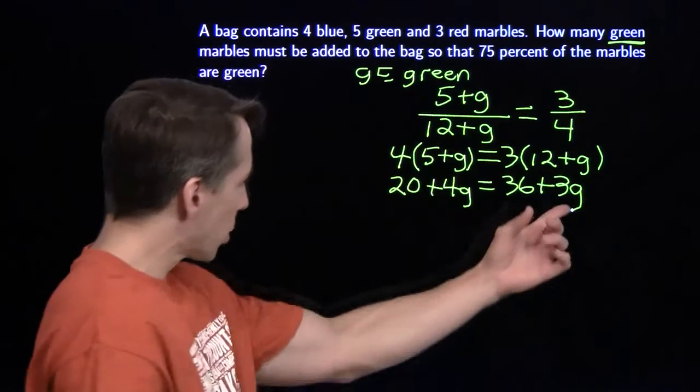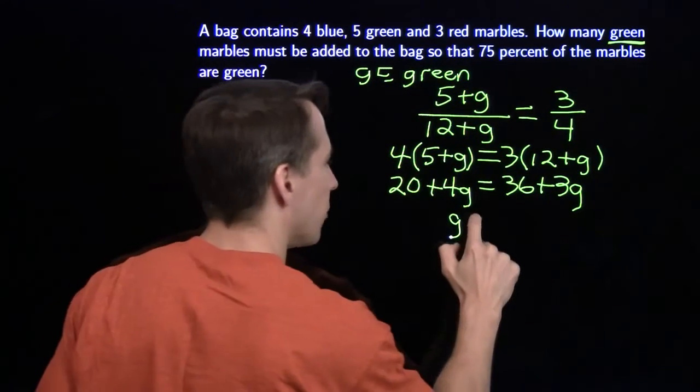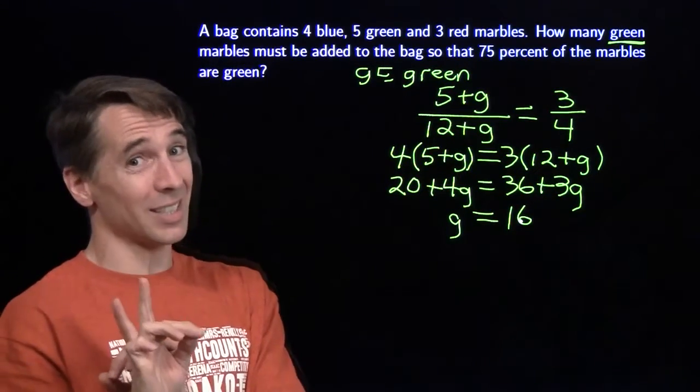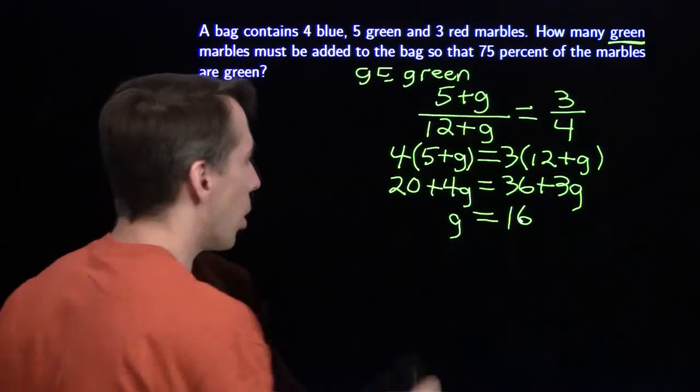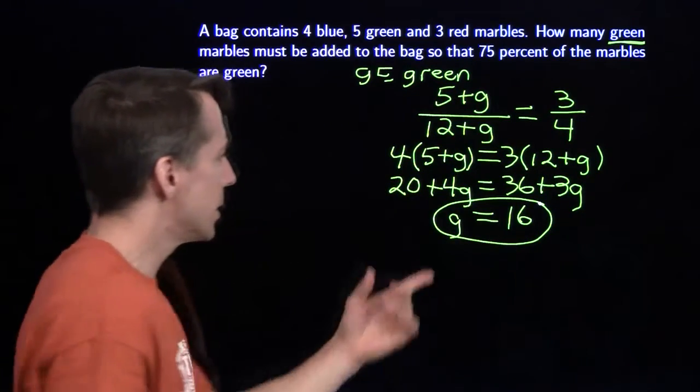Now we're all set. I'm going to subtract 3G from both sides, leaving me a G over here. I'm going to subtract 20 from both sides, and that gives me G equals 16. I've got to make sure, last step in the word problem: how many green marbles? That's what we're looking for. G is the green marbles. I'm going to make sure we're answering the question that we're asked.